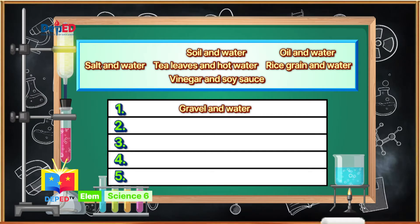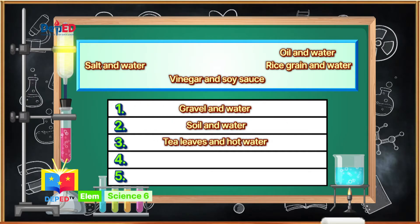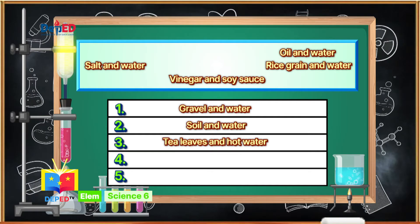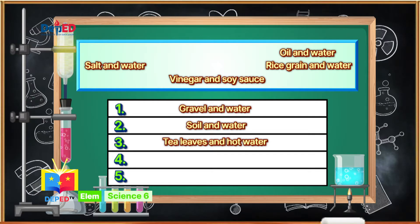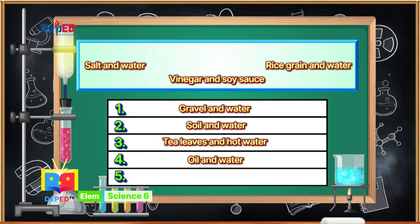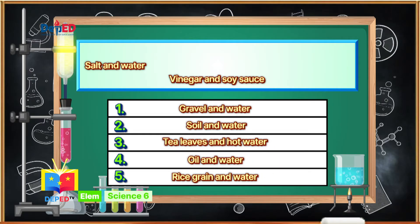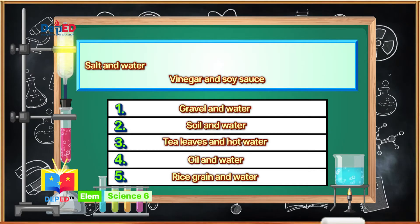Is the mixture of soil and water an example of suspension? Yes, it is! Is the mixture of tea leaves and hot water an example of suspension? Yes, it is! Is the mixture of vinegar and soy sauce an example of suspension? It is not, because the mixture of vinegar and soy sauce is an example of solution. Is the mixture of oil and water an example of suspension? Yes, it is! Is the mixture of rice grain and water an example of suspension? Yes, it is! The examples of suspension are: gravel and water, soil and water, tea leaves and hot water, oil and water, and rice grain and water.